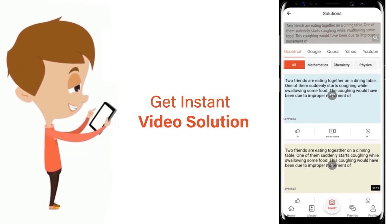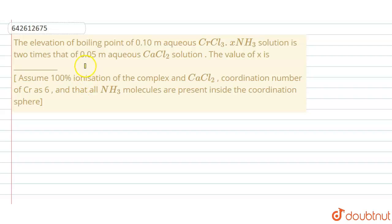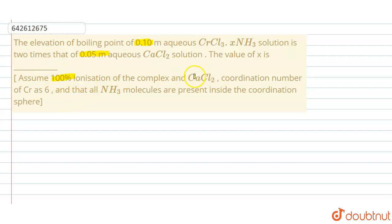The question states that the elevation of boiling point of 0.10 molal aqueous CrCl₃·xNH₃ solution is two times that of 0.05 molal aqueous CaCl₂ solution. We have to find the value of x. Additional information given: assume 100% ionization of the complex and CaCl₂. The coordination number of Cr is x, and all NH₃ molecules are present inside the coordination sphere.